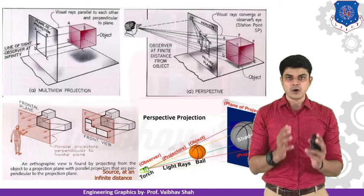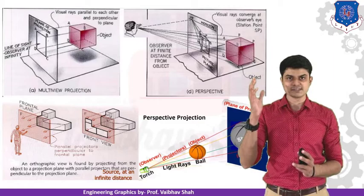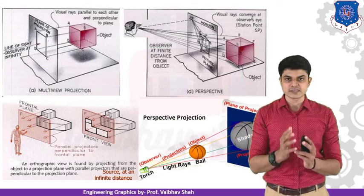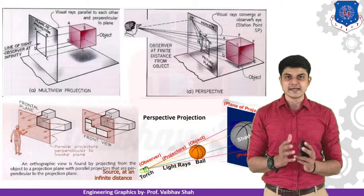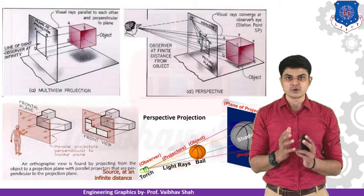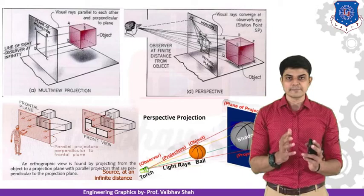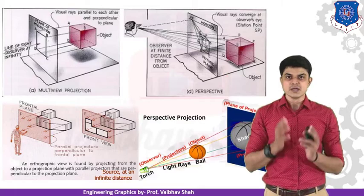Let us compare orthographic projection with another kind of projection — perspective projection. In perspective projection, we have one cube again, with a plane of projection placed in front just like in orthographic projection, but now we observe the object from a finite distance. Whenever you are observing any object from a finite distance, your visible rays from the eyes will converge towards your eyes. So the rays are convergent, and you end up with a smaller size of the cube represented on your plane of projection.